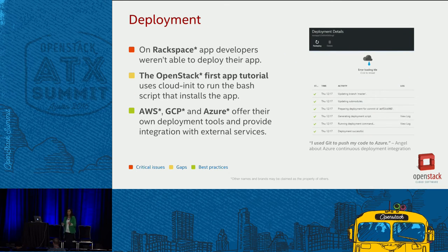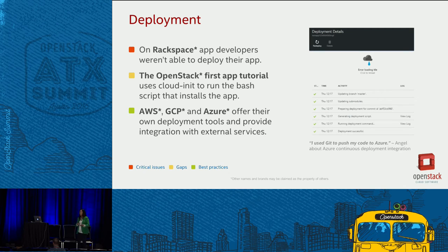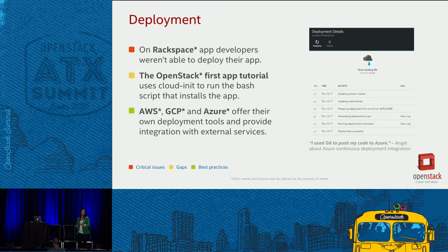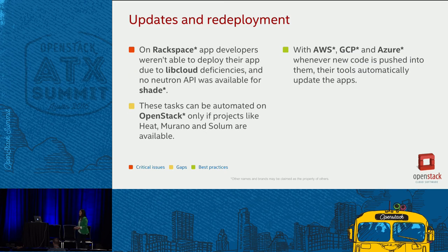AWS and Google Cloud provide their own deployment tools — basically a CLI — and developers can deploy their app with just a few commands. For OpenStack, MyFirstApp used Cloud Init, a tool that allows you to run batch commands after the creation of a virtual machine. So if you want to automate the deployment of your application on OpenStack, you have to create your own scripts. There is no easy deployment tool available for entry-level or onboarding developers.